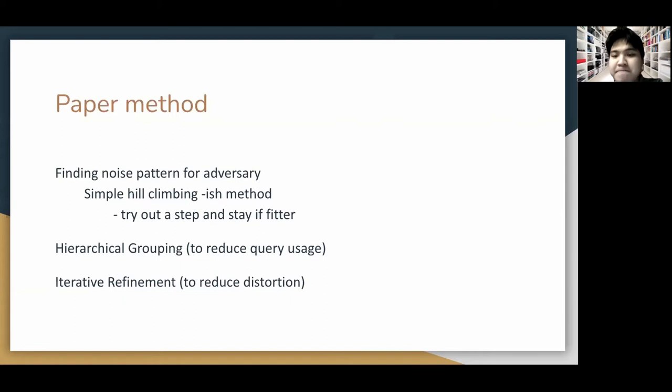As you might imagine the complexity is so big as we perform on each pixel value. Hierarchical grouping is introduced to reduce the query usage utilizing the locality of the image to group adjacent pixels together. Then the algorithm uses iterative refinement to reduce distortions simply narrowing down the distortion as long as the input is misclassified.